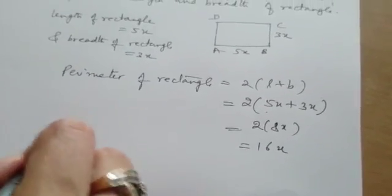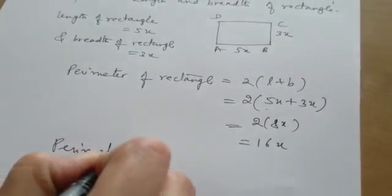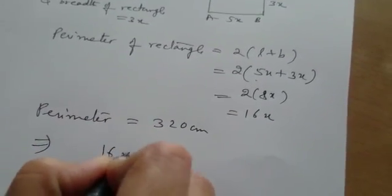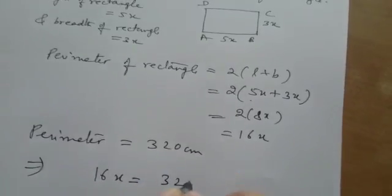It is given that perimeter is 320 cm. Okay. This means 16x is 320 cm.